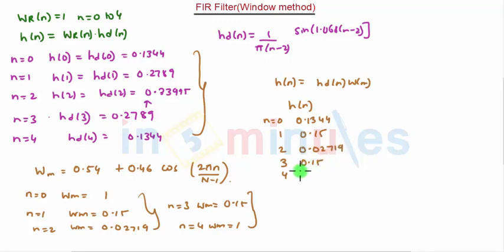When n is equal to 3, it is 0.15. And when n is equal to 4, it is 0.144. Thus we have obtained the response by using rectangular and Hamming window. Thank you.